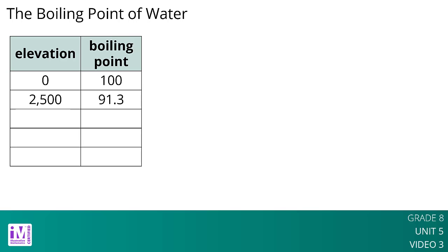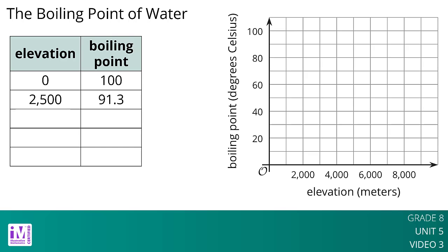If we assume the boiling point of water is a linear function of elevation, we can use these two data points to calculate the slope of the line. The slope means that for each increase of 2,500 meters, the boiling point of water decreases by 8.7 degrees Celsius.